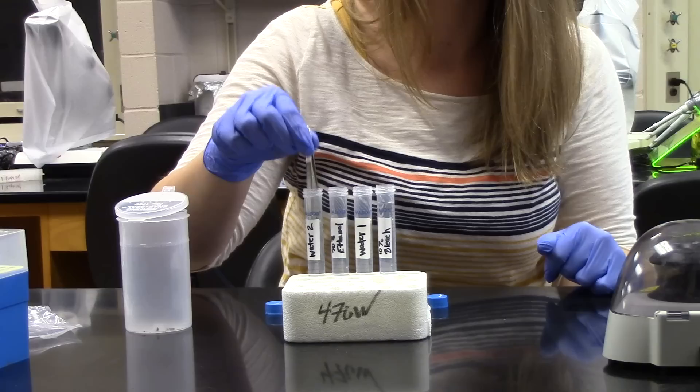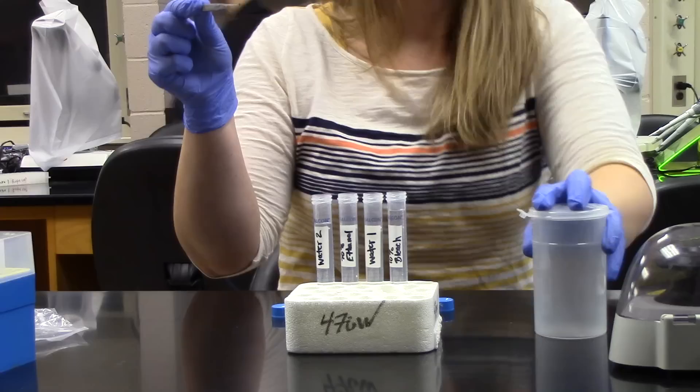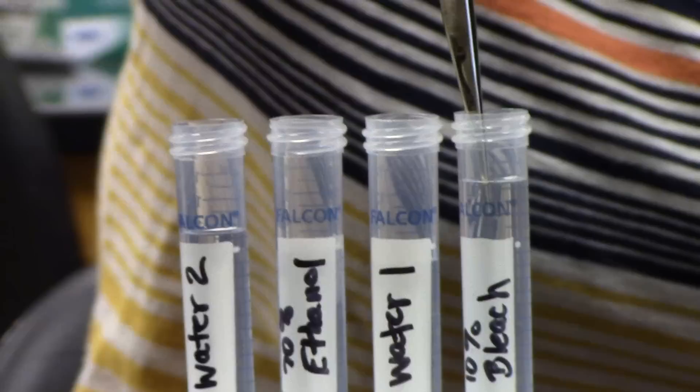Once our tweezers are sterilized, we can collect our bean beetle. Make sure you have a good hold on the beetle so that you don't lose it throughout your wash. And the beetle goes into the bleach for 3 seconds.